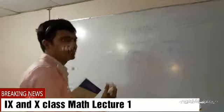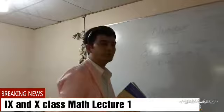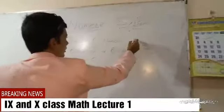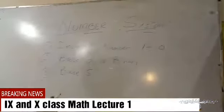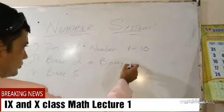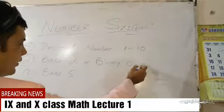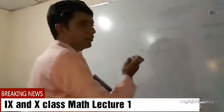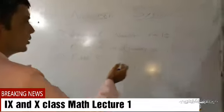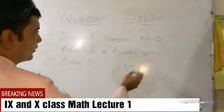So these are the number systems we are using nowadays. Decimal means 1 to 10, we normally use 1 to 10. And binary, we have 0 and 1, it means only 2: 0, 1. And then we have base 5, it means 1 to 5 is the base.